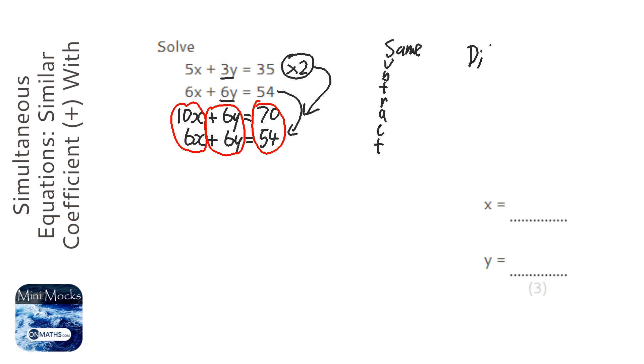If they have different sign, we add. Well, they've got the same sign here, so we're going to subtract all three of these going downwards. So 10x take away 6x is 4x, 6y take away 6y is nothing, and the whole point is to get rid of those, and 70 take away 54 is 16.